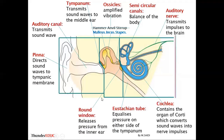The round window is very important in absorbing pressure from the inner ear. When vibration enters the cochlea, some pressure must be sent back because not all of it is used, and that pressure is absorbed by the round window. So the round window is important in releasing pressure from the inner ear.